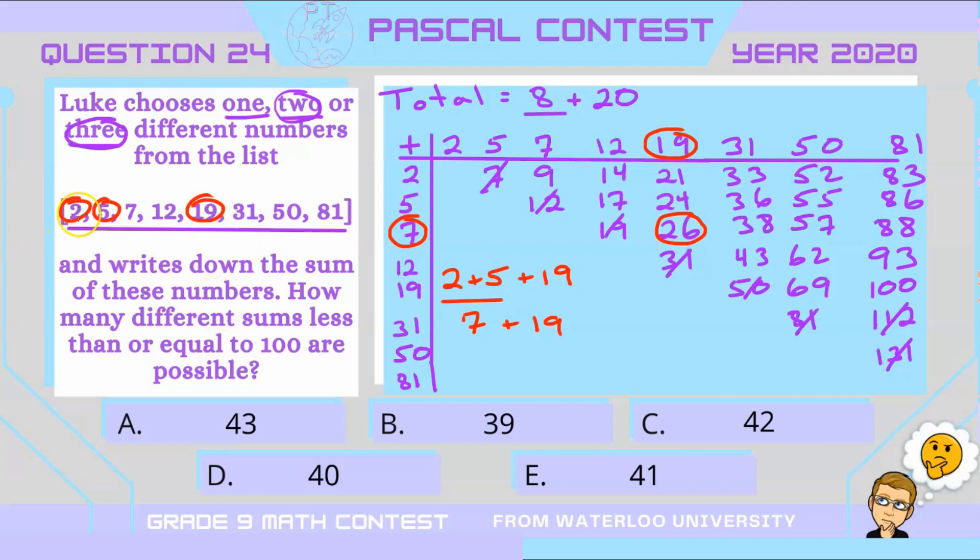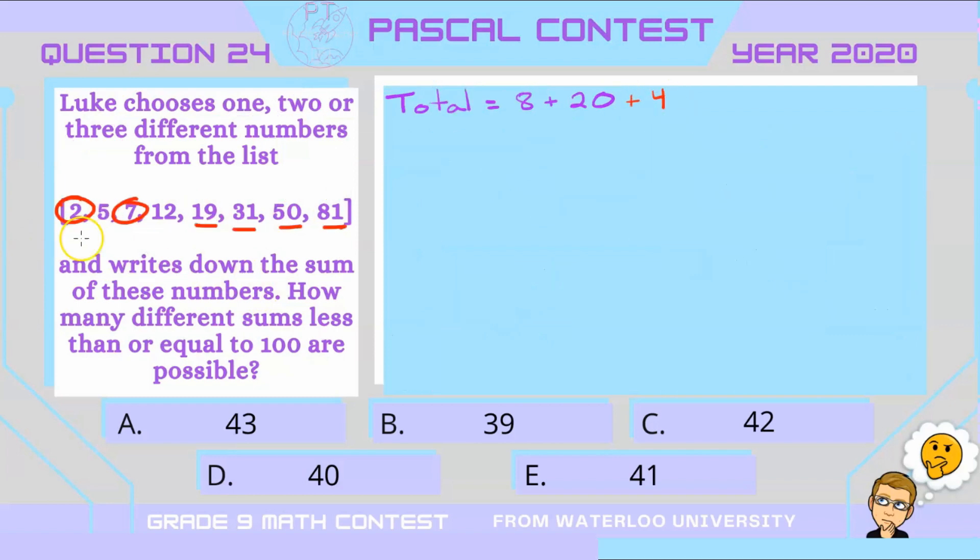So what we would have to do instead of doing two, five, and 19, we'd have to do two, seven, and 19. We could also do two, seven, and 31. We could do two, seven, and 50, and we can do two, seven, and 81. So that is four additional combinations that we can do. So let's write these combinations out to keep track.